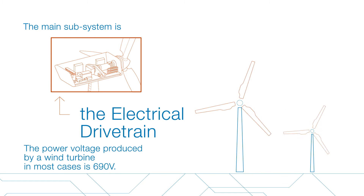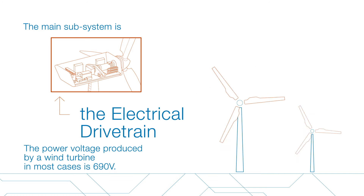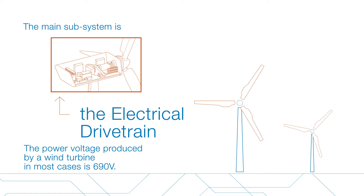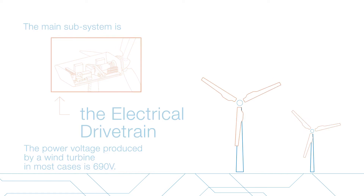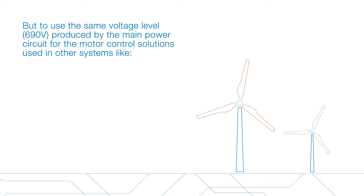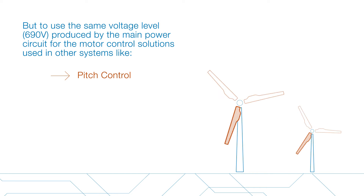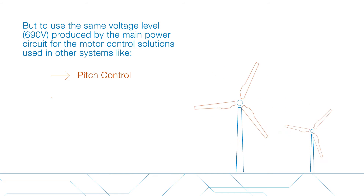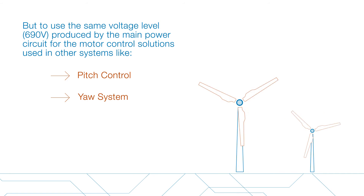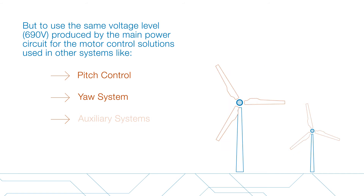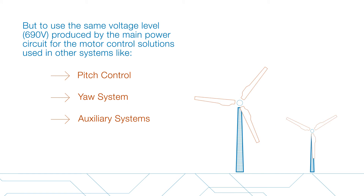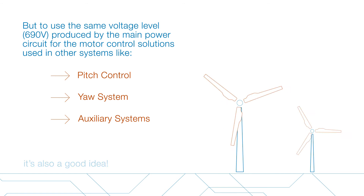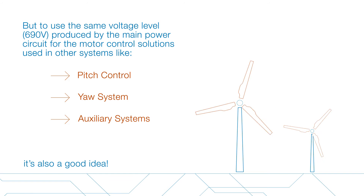The power voltage produced by a wind turbine in most cases is 690 volts. Using the same voltage level — 690 volts — produced by the main power circuit for the motor control solutions used in auxiliary systems like pitch control, yaw system, and other auxiliary systems is also a good idea.